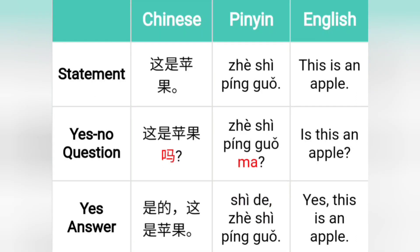Here is the first example. The statement 'this is an apple' is 'Zhè shì píngguǒ.' Now the yes-no question 'is this an apple?' is 'Zhè shì píngguǒ ma?' The yes answer is 'Shì de — Zhè shì píngguǒ,' which means 'yes, this is an apple.'